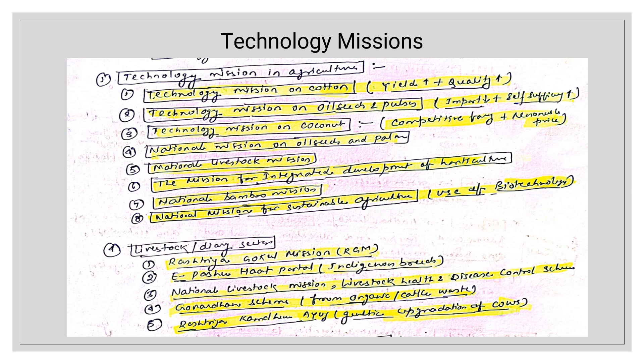For the livestock and dairy sector, key schemes include: Rashtriya Gokul Mission and Pashudhan Portal to encourage indigenous breeds; National Livestock Mission for livestock health and disease control; Govardhan Scheme for producing organic fertilizer from organic and cattle waste; and Rashtriya Kamdhenu Aayog for genetic upgradation of cows. All these can be directly used in your answers.